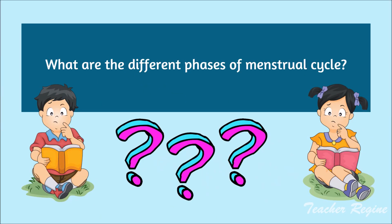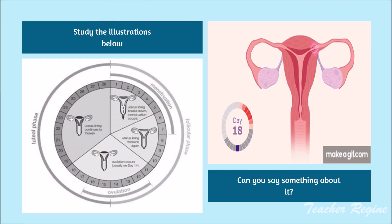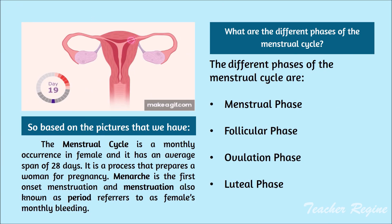What are the different phases of the menstrual cycle? Based on the pictures, the menstrual cycle is a monthly occurrence in females and it has an average span of 28 days. It is a process that prepares women for pregnancy. Menarche is the first onset of menstruation, and menstruation — also known as a period — refers to a female's monthly bleeding.